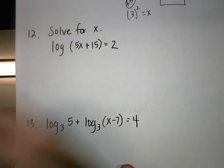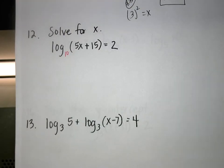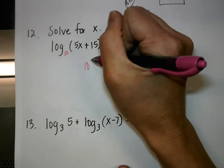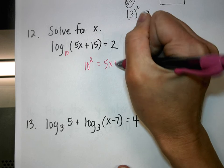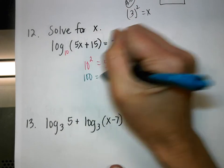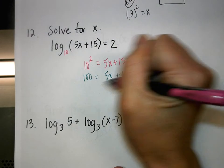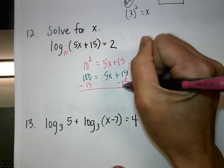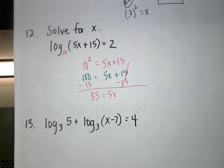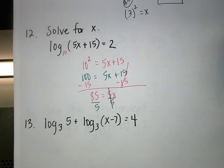Number 12: Any time we don't have a base written, we have base 10. To solve, change to exponential form: 10 to the second power equals 5x + 15. 10 squared is 100, so 100 equals 5x + 15. Subtract 15 from both sides to get 85 equals 5x, then divide by 5. 85 divided by 5 is 17.